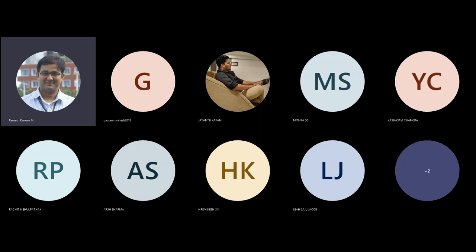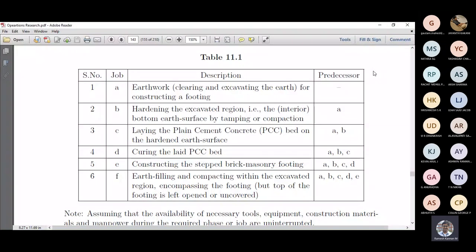Digital assignment number two is on critical path method. For that, you need to have the activities followed by predecessors, immediate predecessors, and successors, and immediate successors. Generally, we'll prefer activity on arrow, not activity on node. We only prefer activity on arrow, so you need node links also or event links.